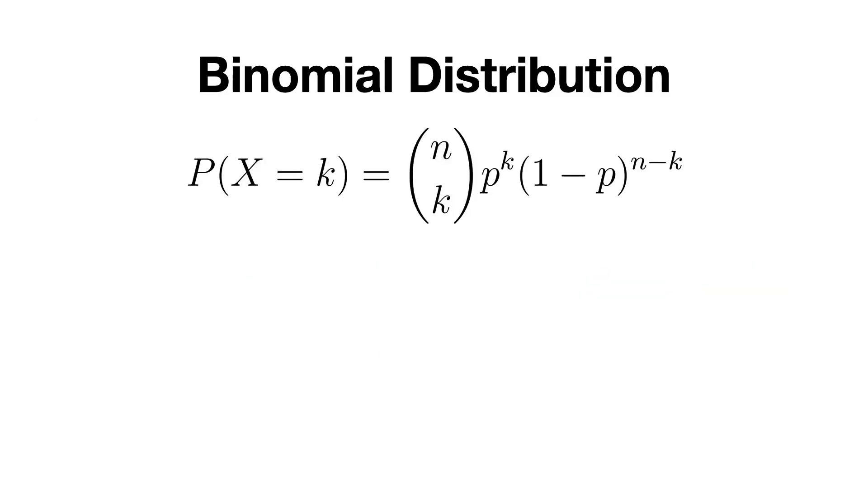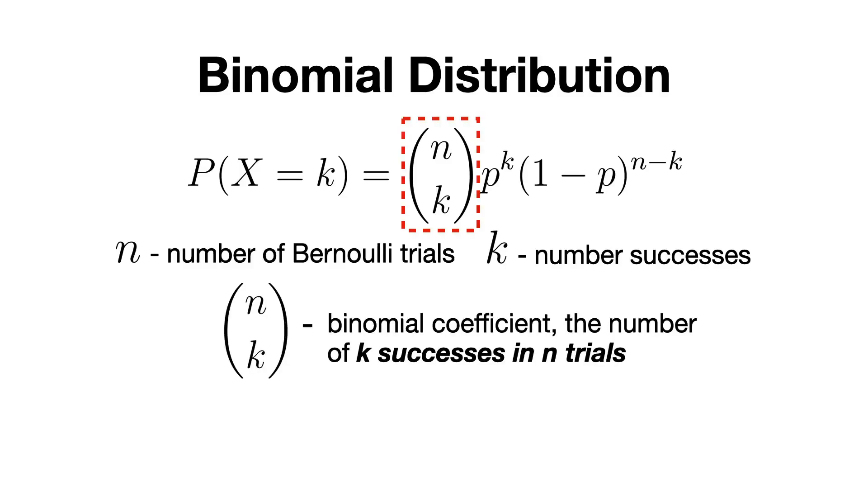And the probability formula for the binomial distribution is the following: P(X = k) equals combinations of n taken k multiplied by p^k multiplied by (1-p)^(n-k), where n is the number of Bernoulli trials and k is the number of successes, which calculates the number of ways we can arrange k successes among n trials, also known as combinations in math.